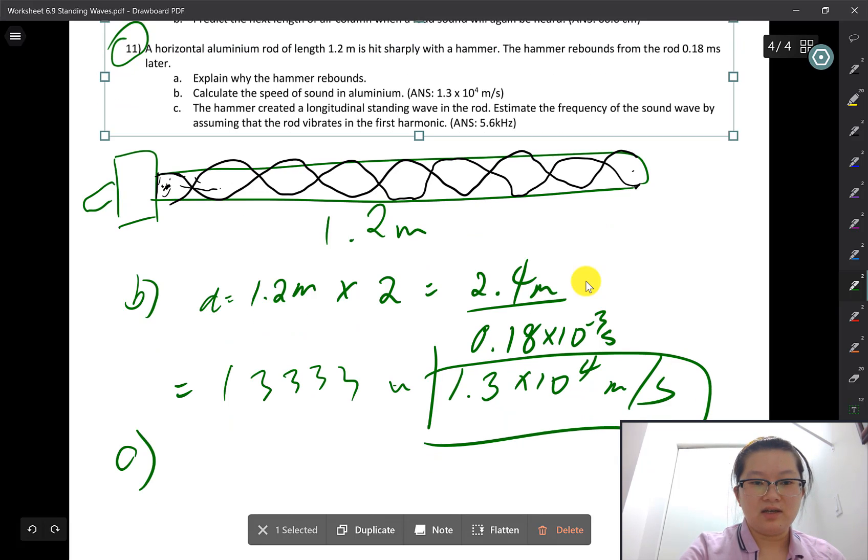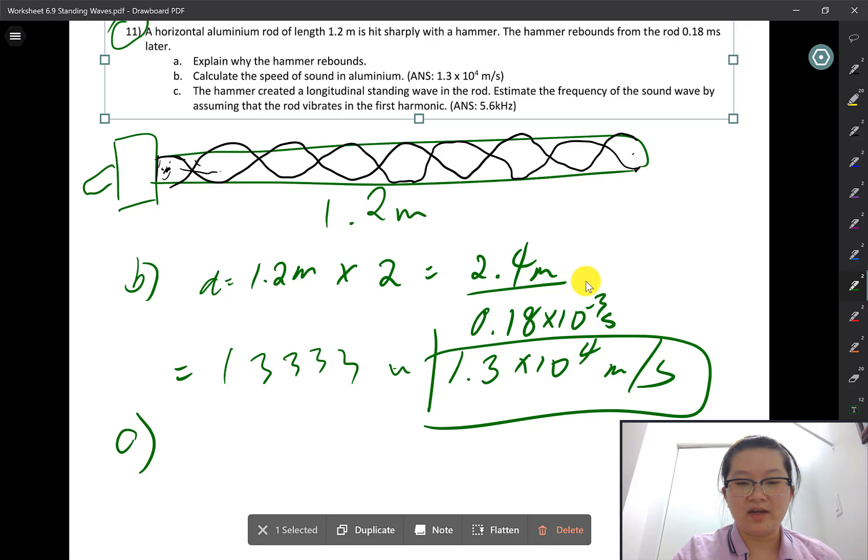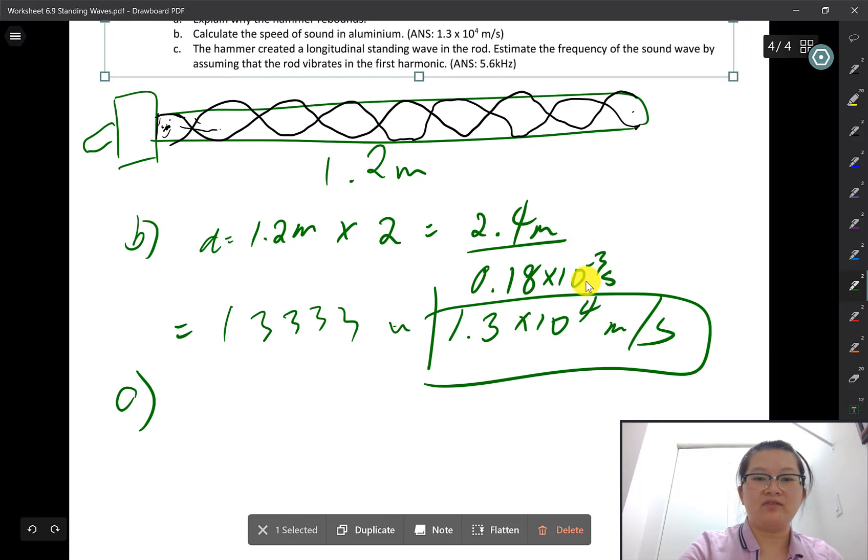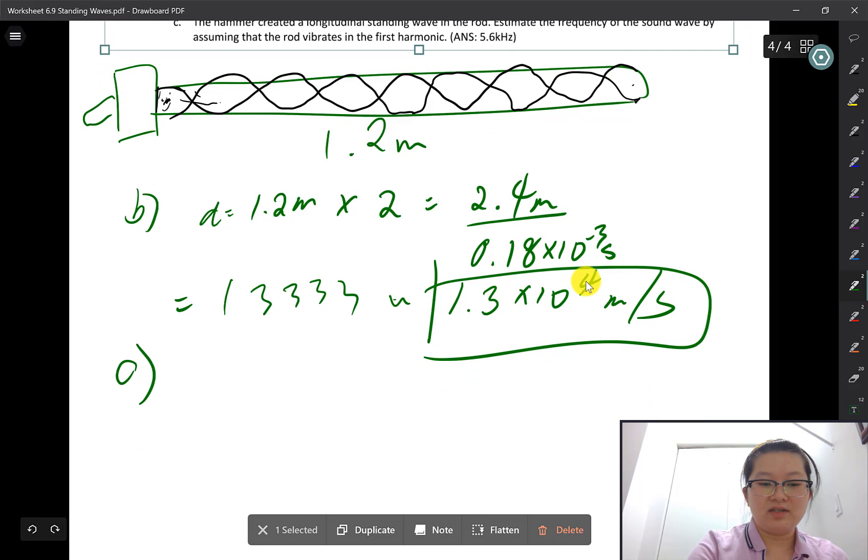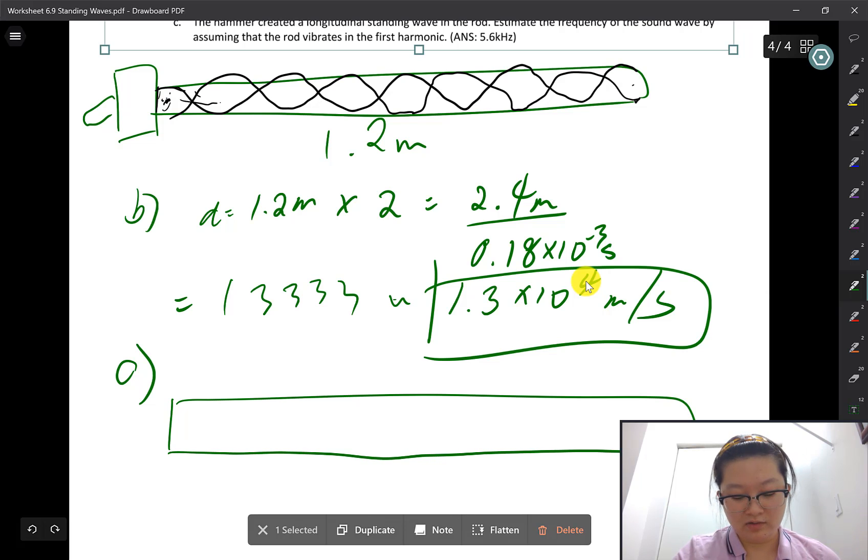Question C: The hammer created a longitudinal standing wave in the rod. Estimate the frequency by assuming the rod vibrates in the first harmonic. This requires knowing the diagrams for open-closed pipe systems. In this case, since the sound travels into air—a less dense medium—both ends are open.